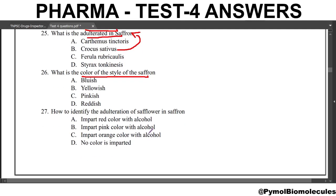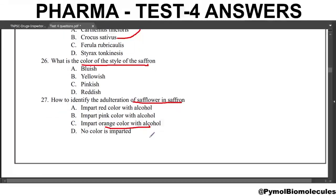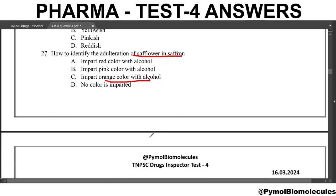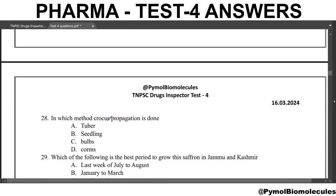Next question: how to identify the adulteration of safflower in saffron? Safflower is added as an adulterant in saffron. It may impart orange color with alcohol, by which its presence is identified. Next question: in which method is Crocus propagation done? The answer is corms.